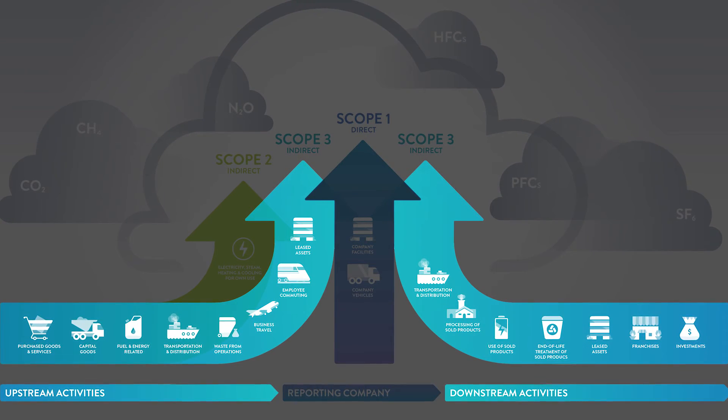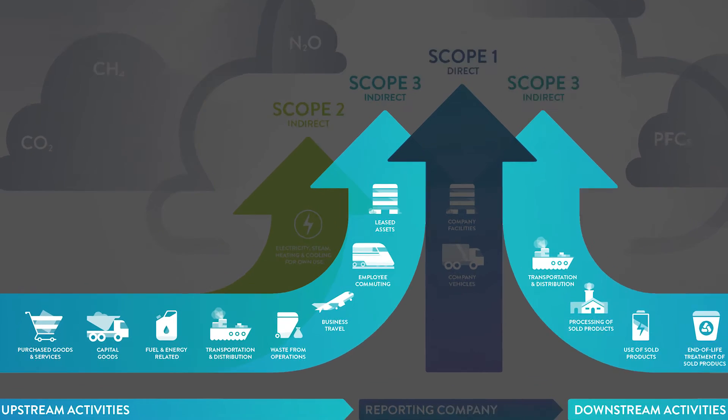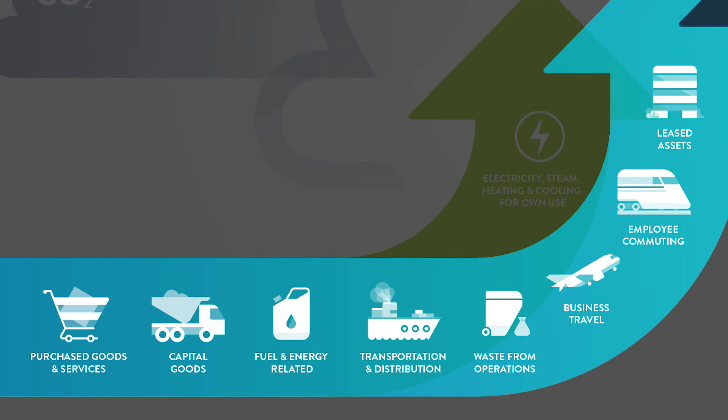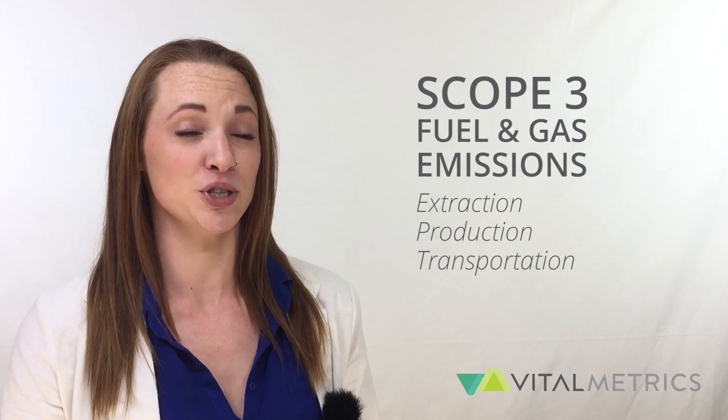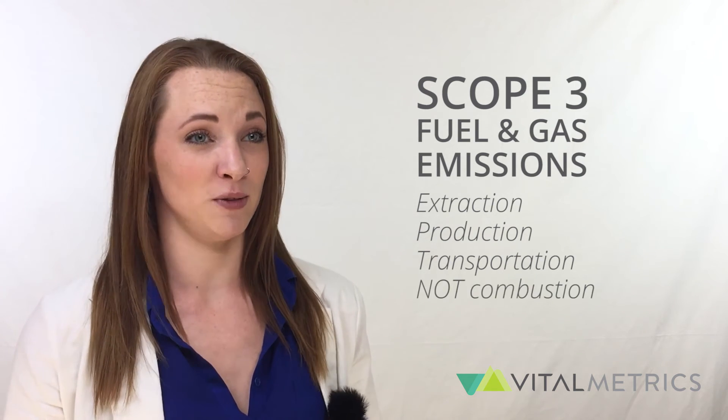Now we've mentioned the 15 categories, discussed upstream and downstream emissions, and highlighted some of the more important Scope 3 categories. There are also a couple of trickier aspects. For instance, fuel and gas are included in Scope 3 in addition to Scope 1 and 2. But in Scope 3, they refer specifically to the extraction, production, and transportation emissions associated with fuel and energy distribution — not the combustion phase emissions.